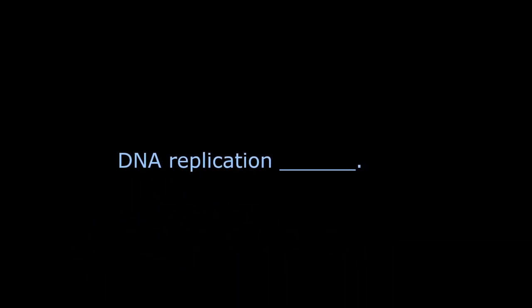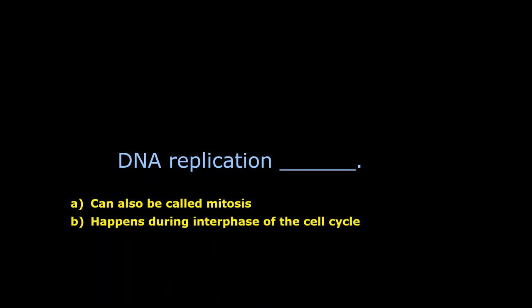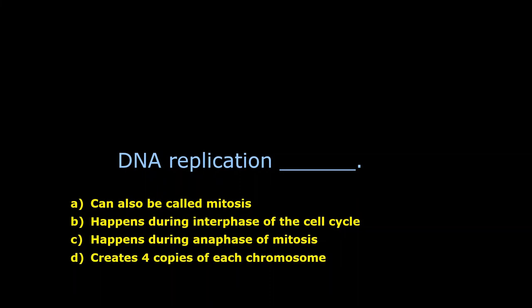DNA replication is amazing. This could be any number of things. Can also be called mitosis? No. Replication precedes mitosis. Remember, replication happens during the S or R phase of interphase. Mitosis is something different. It's nuclear division. It happens during interphase? Yes, it does. That's true. Is that the best answer? Happens during anaphase? No, it does not. Creates four copies of each chromosome? No, it just creates two copies, so we can have a full set for our offspring. So all those are wrong except for B. That has to be the answer then.